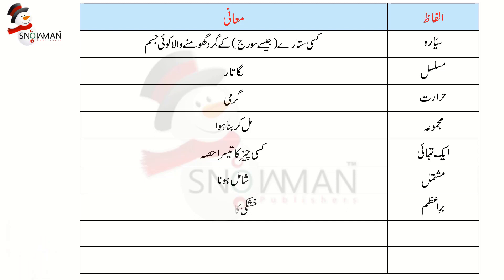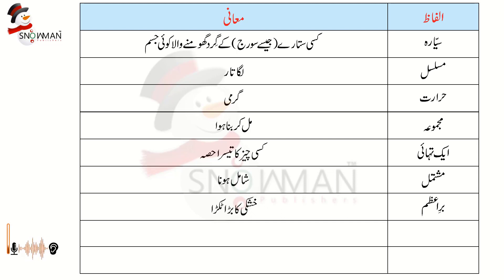بریازم یعنی خشکی کا بڑا ٹکڑا۔ صرف اتنا کہنے سے شاید بریازم کے معنی بچے نہ سمجھ سکیں، تو انہیں بتائیے کہ دنیا کا نقشہ دیکھیں تو بائیں ہاتھ پر امریکہ نام کے دو بریازم ہیں، اور دائیں طرف بہت بڑا علاقہ ہے جس میں ایشیا، افریقہ، یورپ، آسٹریلیا وغیرہ آتے ہیں — وہ سمجھ جائیں گے کہ بریازم یہ ہے۔